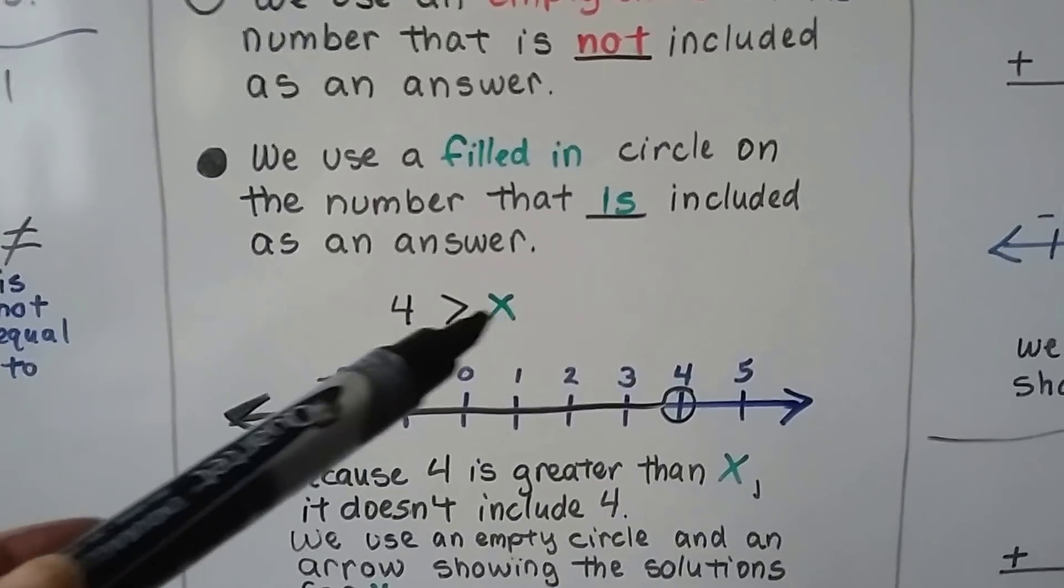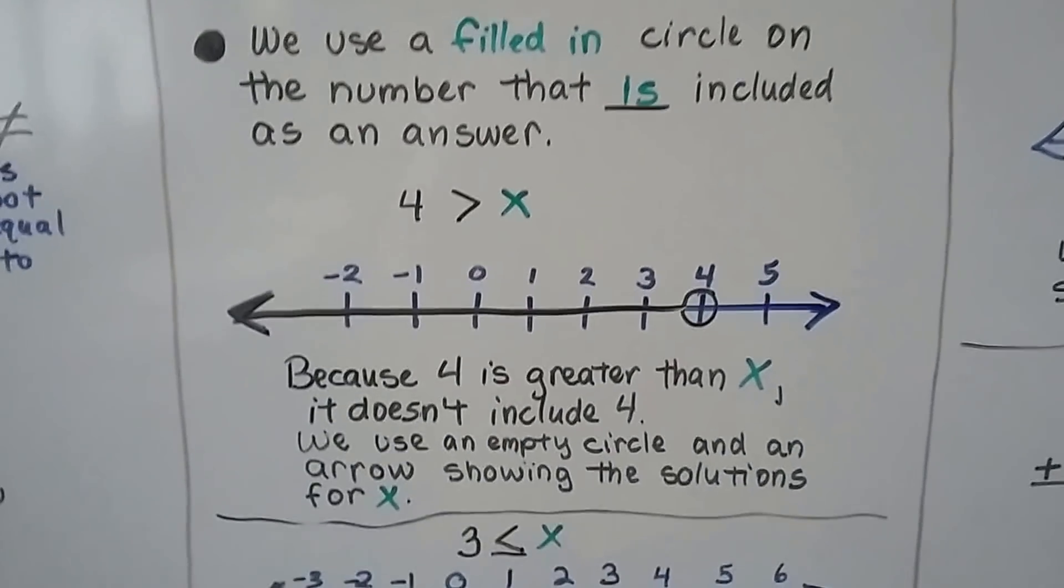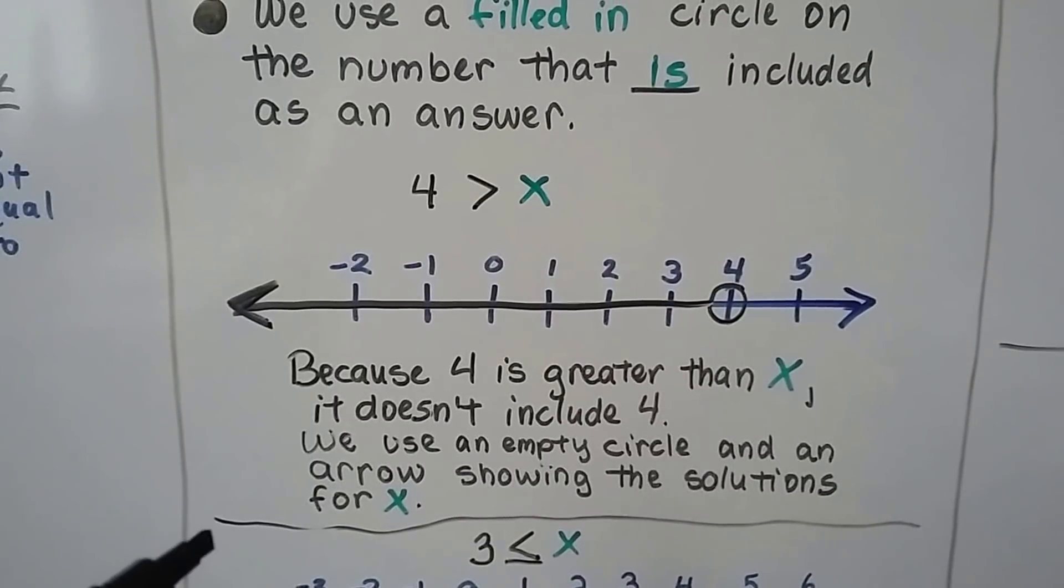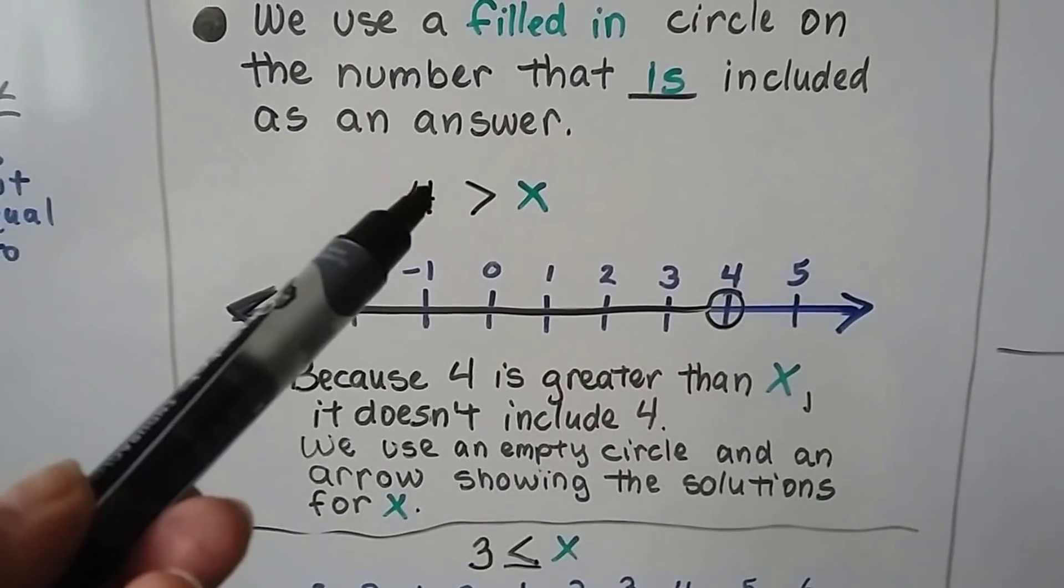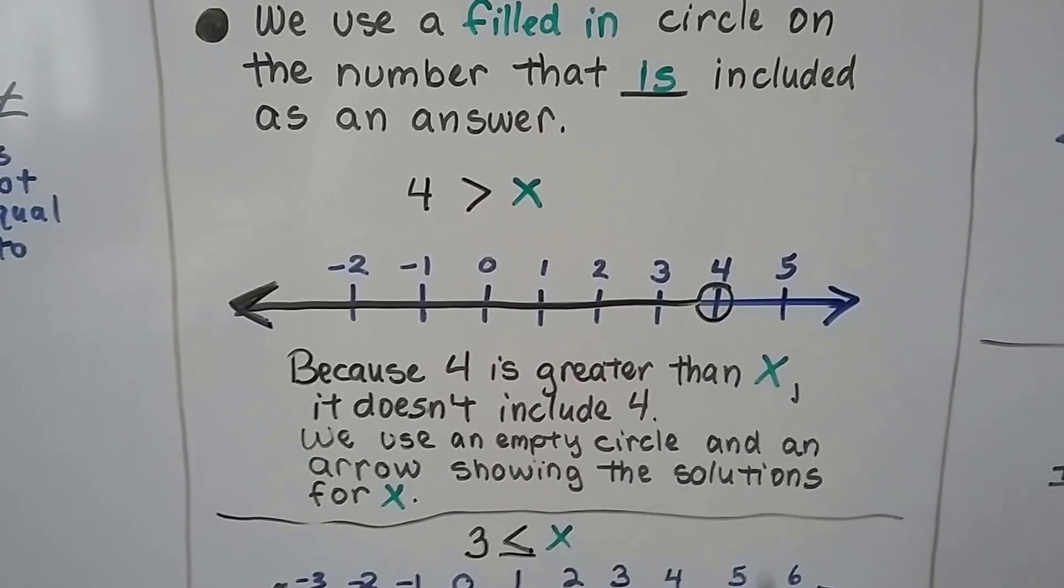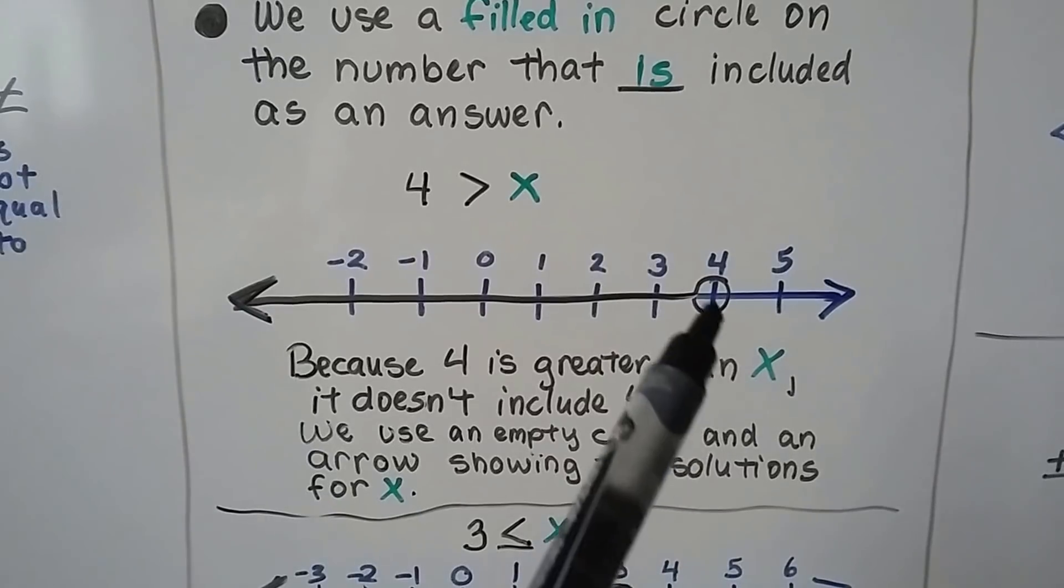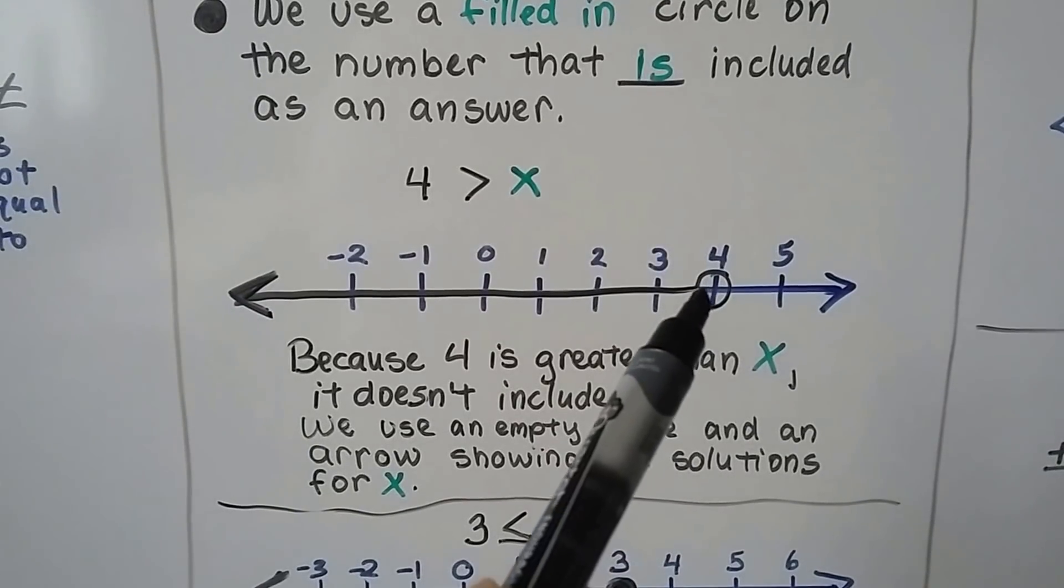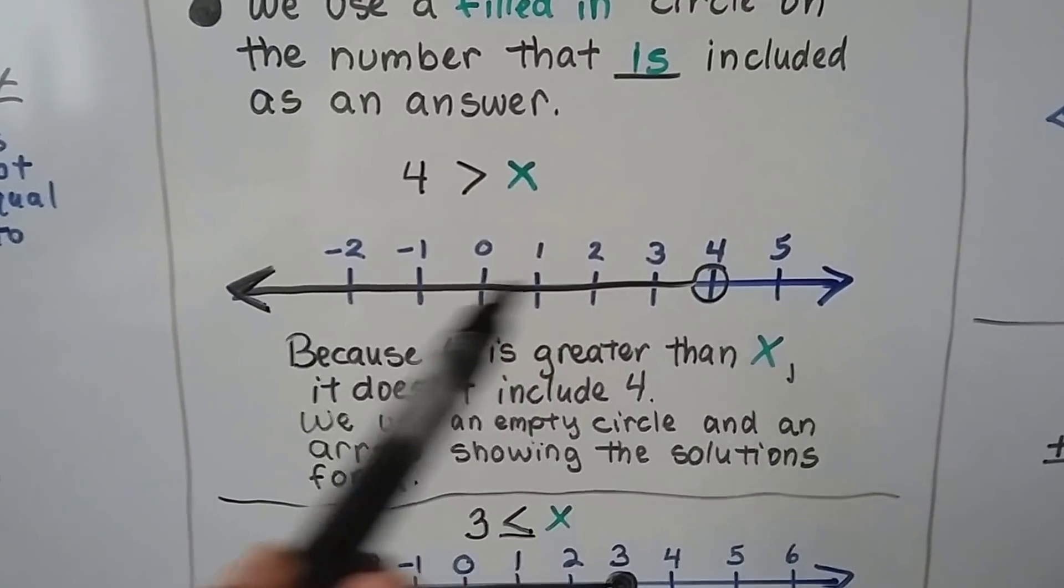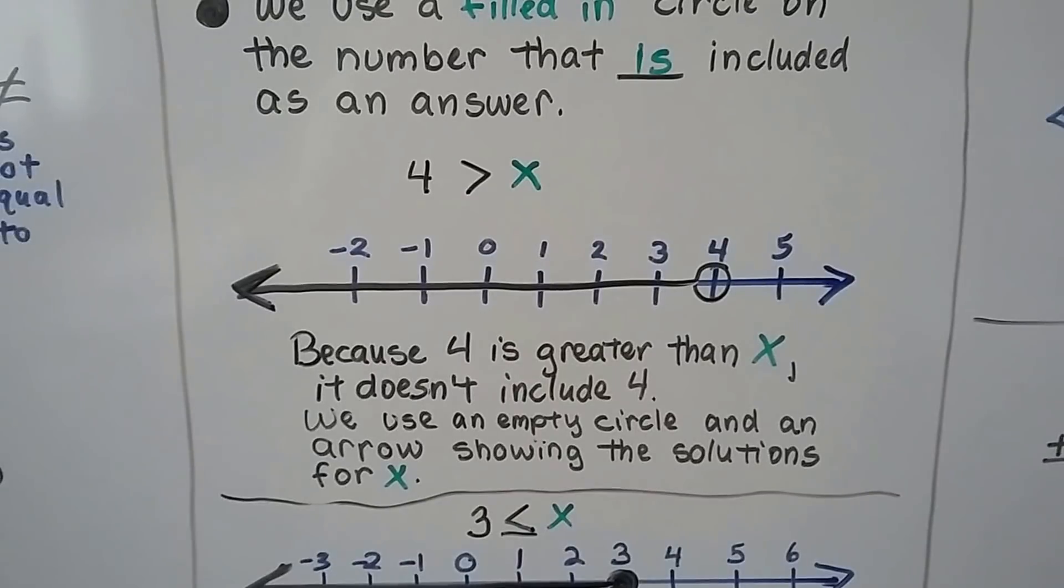So we have 4 is greater than x. So because 4 is greater than x, it doesn't include 4. It would be anything smaller than a 4. So we put an empty circle, an open circle on the 4 showing that it doesn't include it.